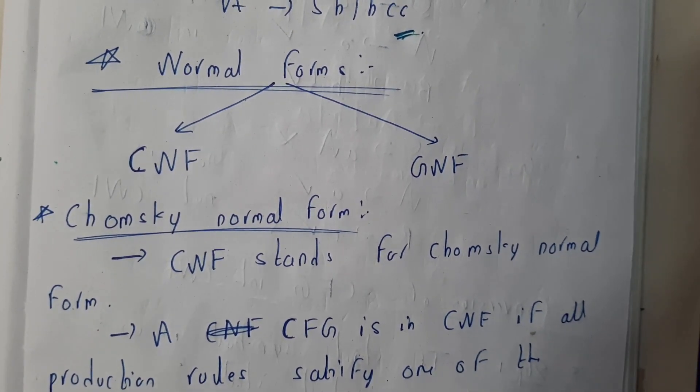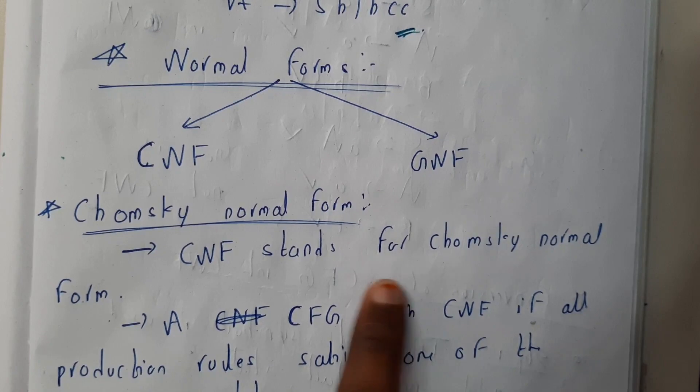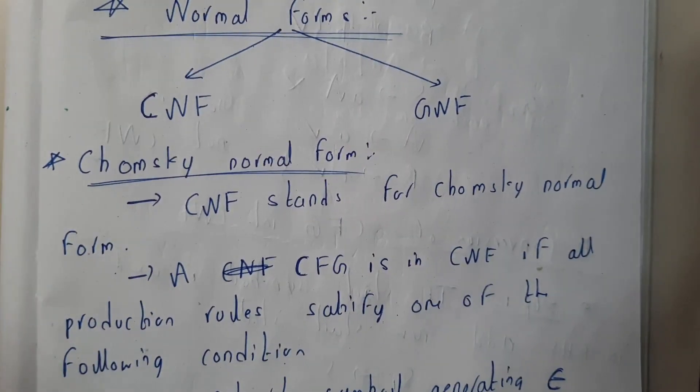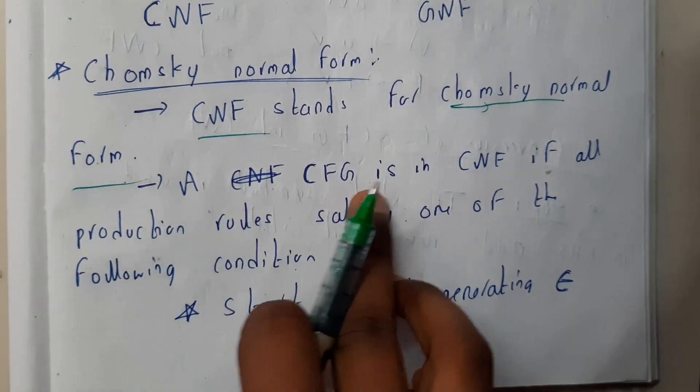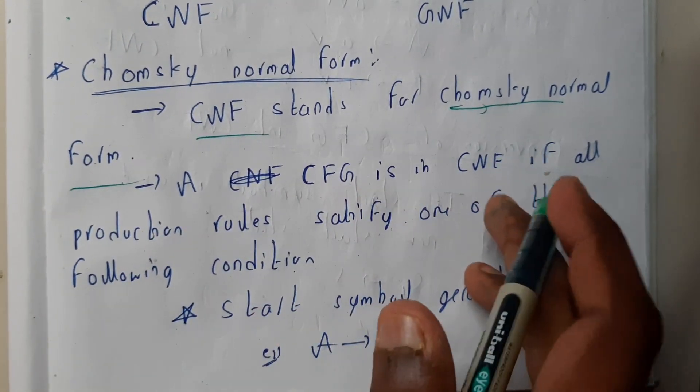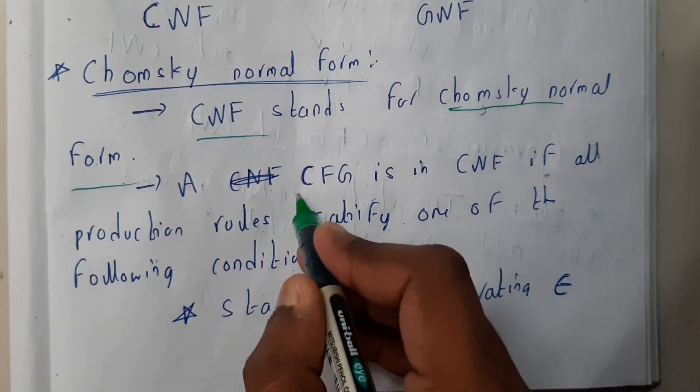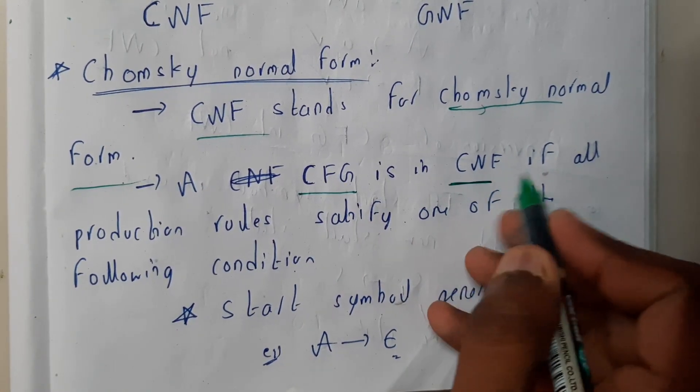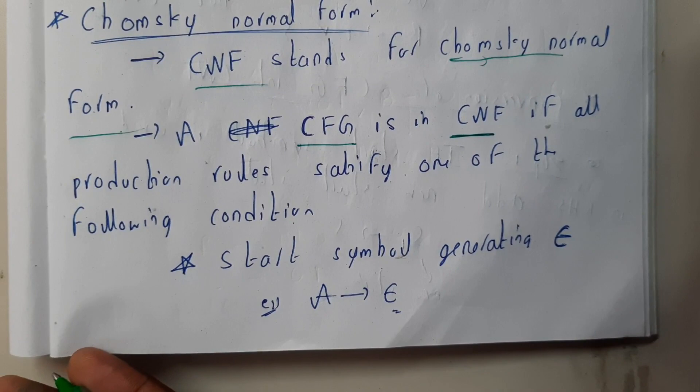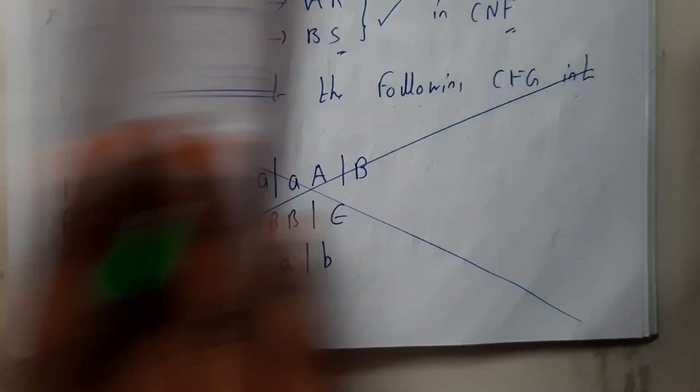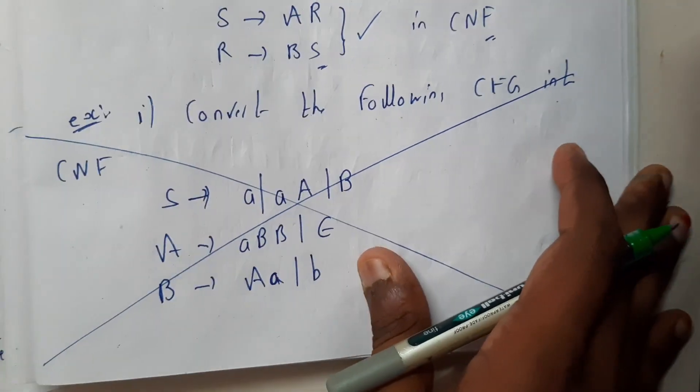So basically, Chomsky normal form, CNF stands for Chomsky normal form. A context-free grammar is in CNF if it follows the following production rules. It should follow some particular rules.